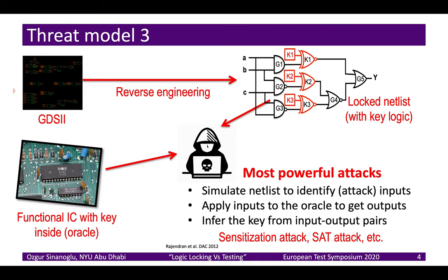In a third threat model, both the locked netlist and the oracle — the working chip with the key inside — are available to the attacker. The attacker does netlist analysis, identifies input patterns to apply, queries the oracle for responses, and then analyzes the input-output pairs to determine the key. These are called oracle-guided attacks. The famous ones are the sensitization attack from 2012 and the SAT attack from 2015.